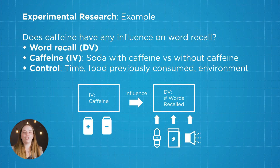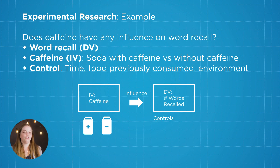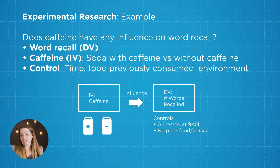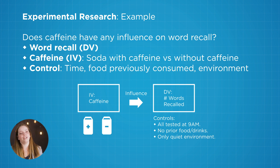What we want to do is make all of those extraneous variables controlled for by keeping them all the same across all conditions. Whether you're taking Coca-Cola or 7-Up, we'll do the experiment at the same time of day, ask you not to drink any caffeinated drinks for the previous 12 hours, and always put you in a quiet room. That makes us more sure that the caffeine is causing the change in memory and not anything else.